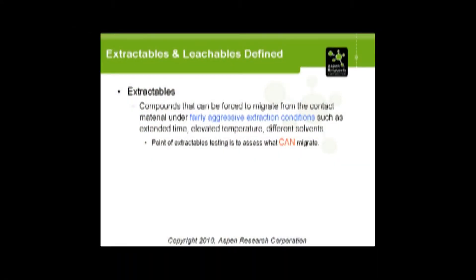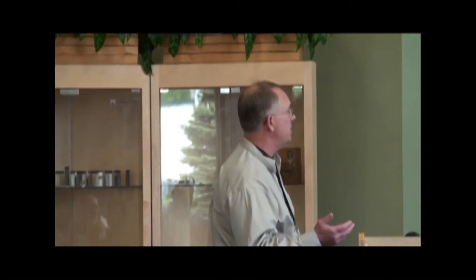We need to talk about what is an extractable and what is a leachable as far as definitions go, as assessed by regulatory agencies or internally by a company. An extractable is defined as a compound that can be forced to migrate through fairly aggressive extraction conditions — under extended time, elevated temperature, and different solvents. The point of extractables testing is to assess what can migrate from the polymer into the extraction solution.